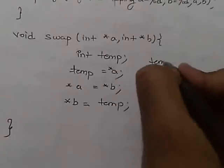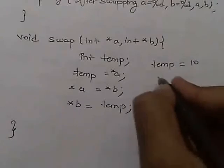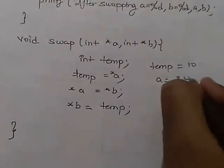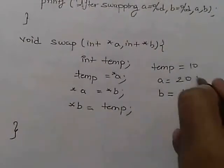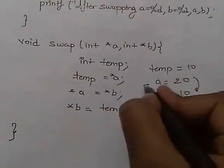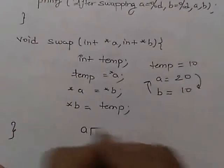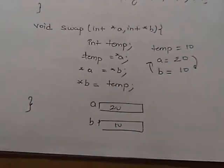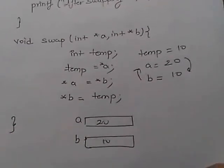We have a temp variable. We are assigning the value 10 to temp, and variable a becomes empty. Then 20 is assigned to a, and b gets the value 10. So these values are swapped and we will get a equal to 20 and b equal to 10. This is the call by reference mechanism. Hope you have understood. Thank you very much.